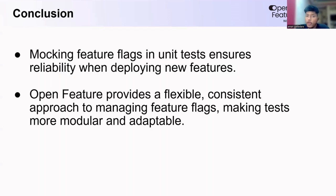In conclusion, mocking feature flags in unit tests ensures reliability when deploying new features. By integrating Open Features with existing traditional testing tools like JUnit and Mockito in your applications, teams can achieve consistent, reliable, and flexible testing for feature-specific logic. Ultimately, Open Features helps teams deliver software more reliably and safely with great confidence.